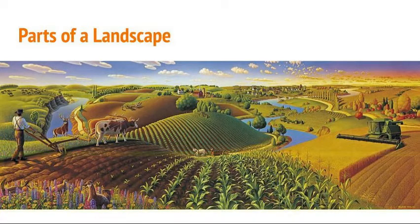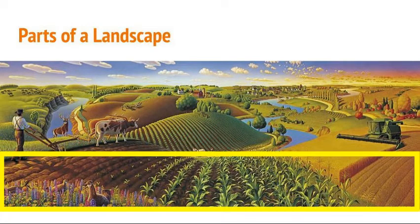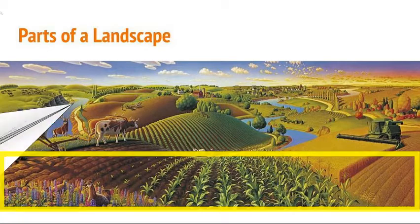This last rectangle represents the foreground. All of those corn plants are the same size, but because of the element of space in this artwork, the ones in the front appear to be larger because it's the foreground. Everything in the foreground is larger than in the rest of the picture.